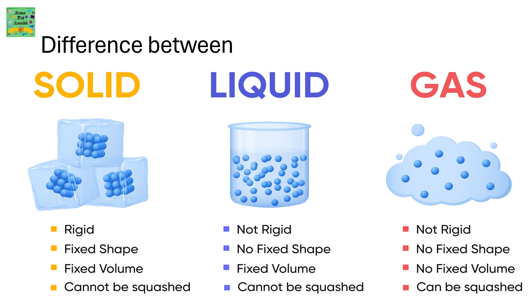Now talking about gas — it's not rigid. Do you think the air around us is rigid? No, it's not. Gas has no fixed shape, it does not have a fixed volume, and it can be squashed — meaning it can be compressed.